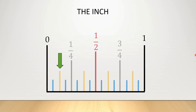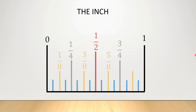Let's try this again, but with the yellow line. The next tallest line, or the yellow line, is 1 over 8, or an eighth of an inch. So if we count by odd numbers, this next one should be 3 over 8. This one should be 5 over 8, because we're counting by odd numbers. And this last one here is 7 over 8.